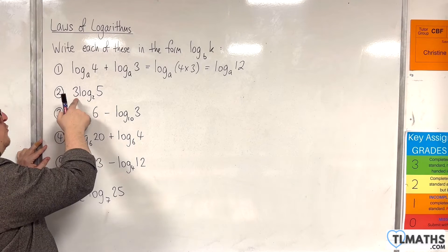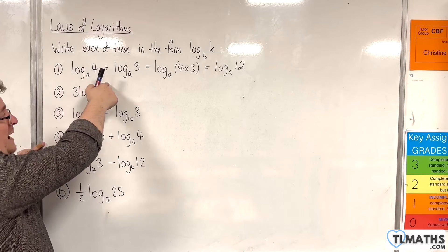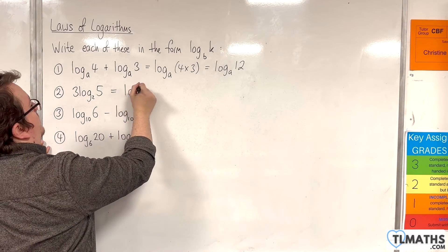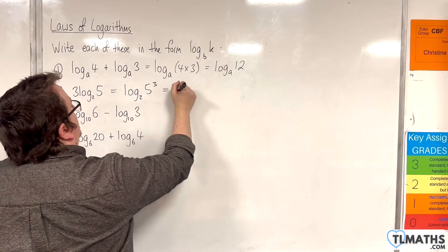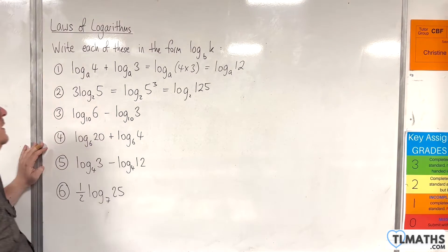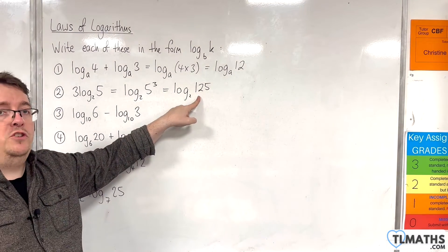The second one we have the 3 out the front of the logarithm which allows me to bring the 3 up to the power using the power rule. So I can write that as log base 2 of 5 cubed. Now 5 cubed is 125. So 3 log base 2 of 5 is the same as log base 2 of 125.